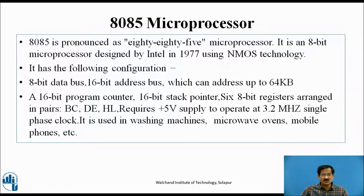The 8085 is an 8-bit microprocessor designed by Intel in 1977 using NMOS technology. It has the following configuration: 8-bit data bus, 16-bit address bus which can address up to 64,000 bytes, a 16-bit program counter, 16-bit stack pointer, and six 8-bit registers arranged in pairs — B, C, D, E, H, L. It requires a +5V supply to operate at 3.2 MHz single-phase clock. It is used in washing machines, microwave ovens, and mobile phones.